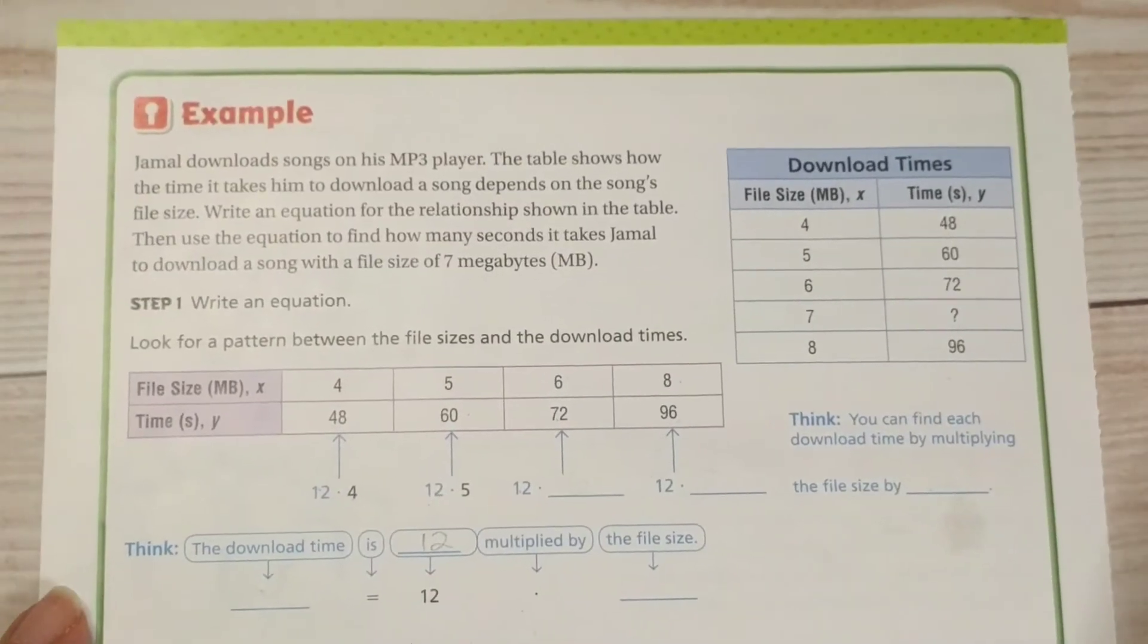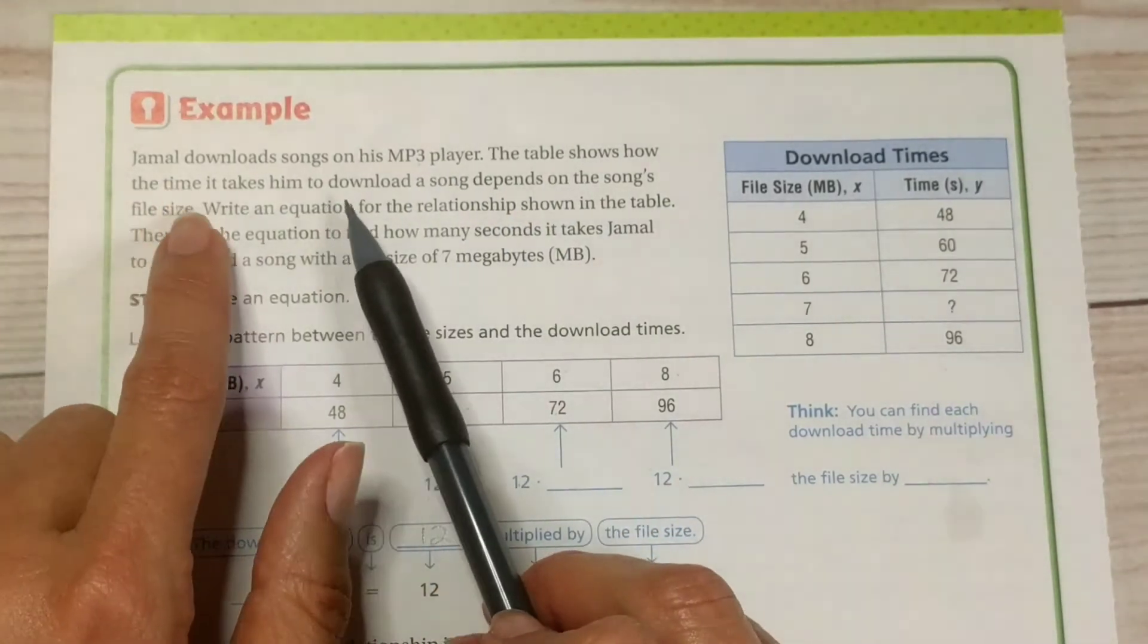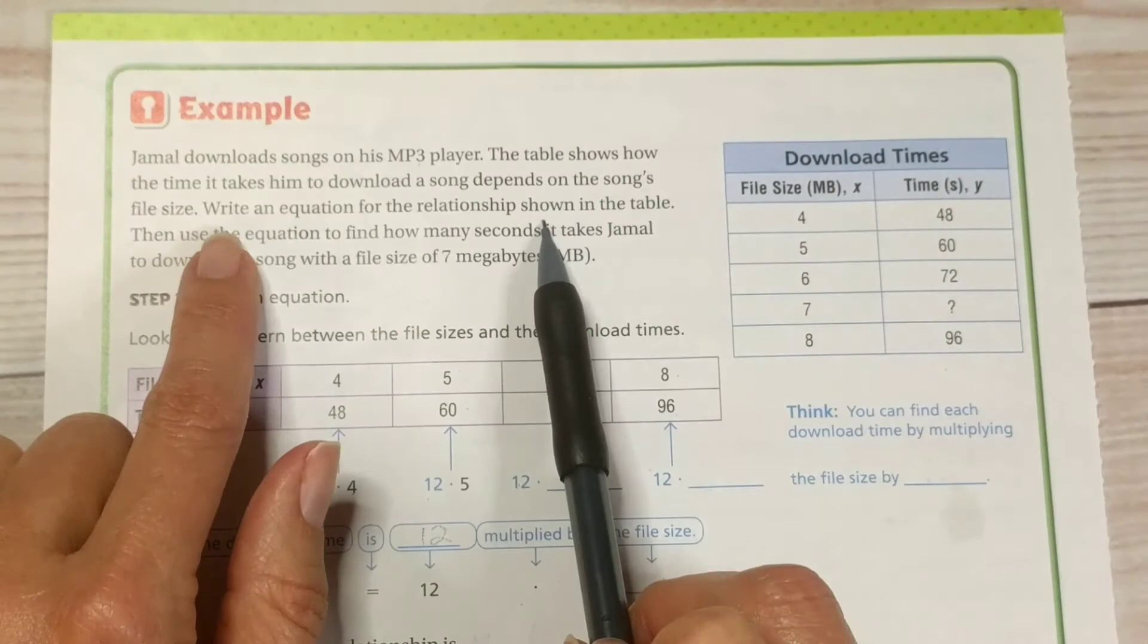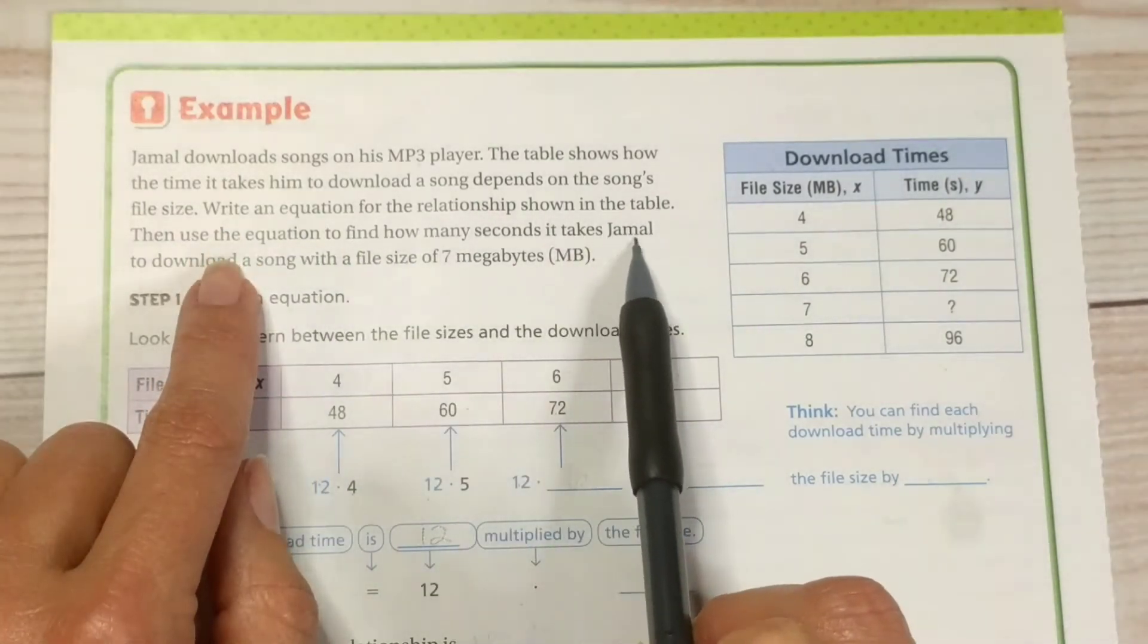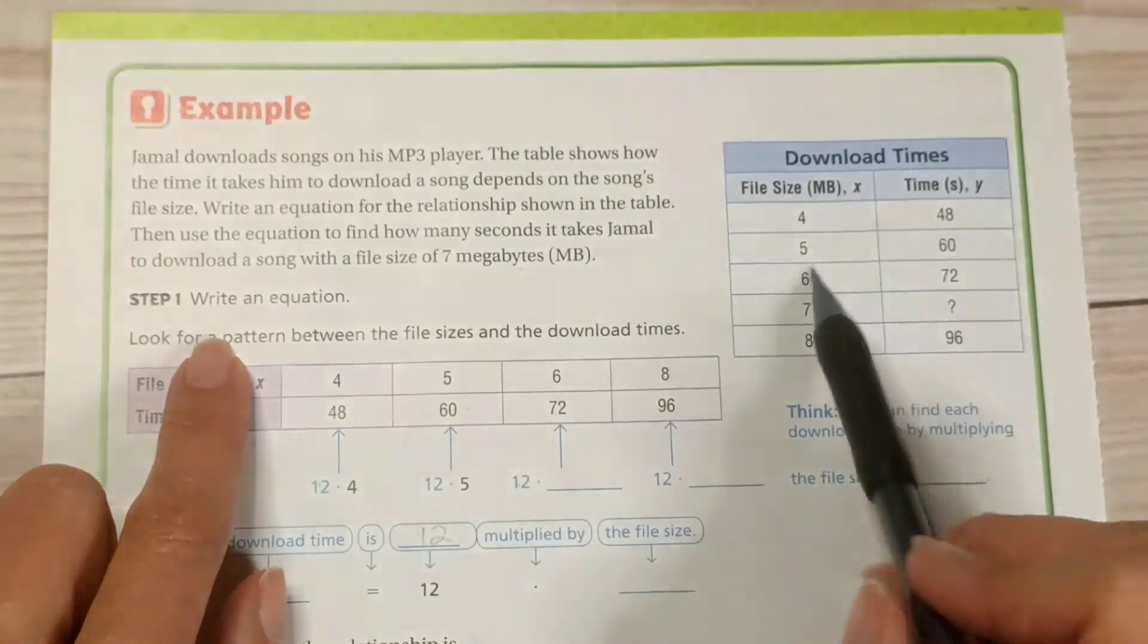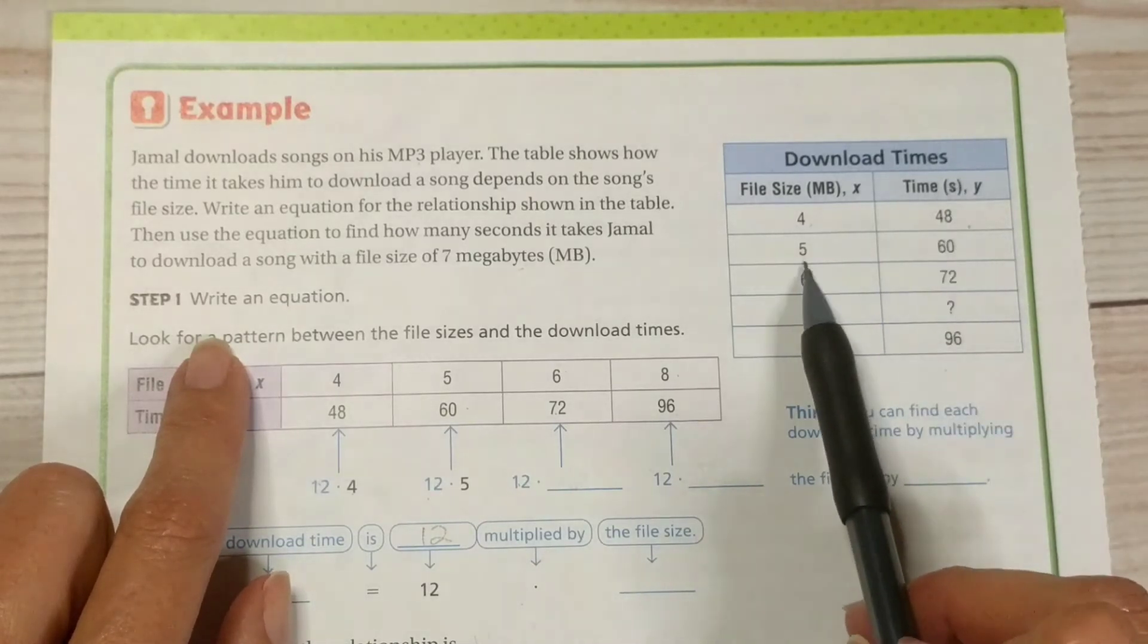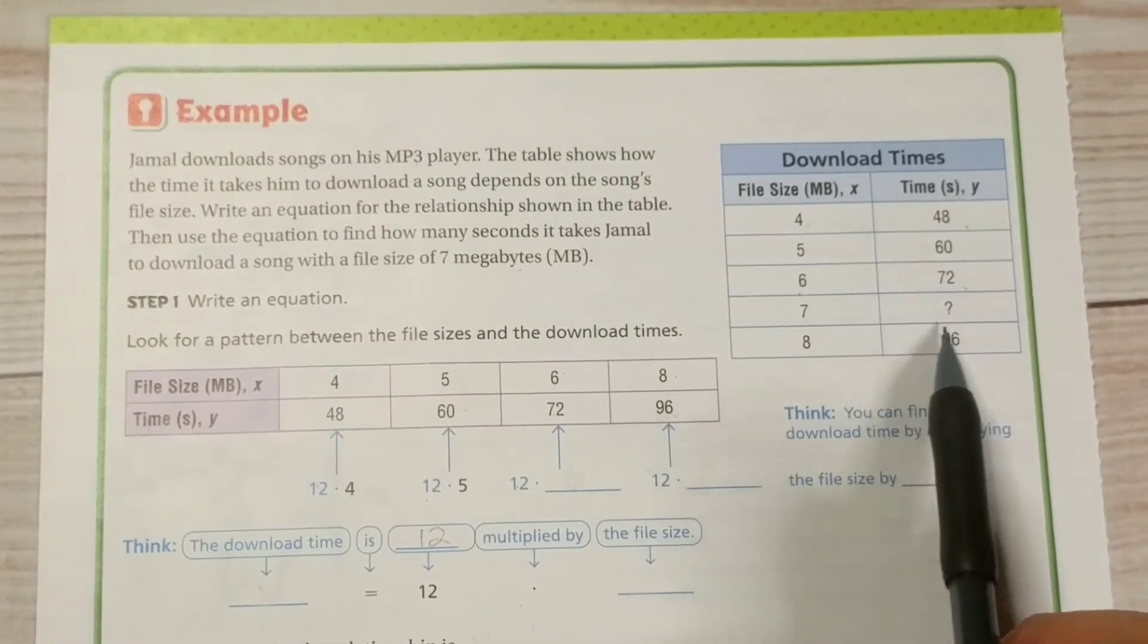Alright, let's take a look at the next page. Jamal downloads songs on his mp3 player. The table shows how the time it takes him to download a song depends on the song's file size. Write an equation for the relationship shown in the table. Then use the equation to find how many seconds it takes Jamal to download a song with a file size of 7 megabytes. So, if it was 4 megabytes, it would take 48 seconds. If it's 5 megabytes, it takes 60 seconds. 6 megabytes, 72 seconds, and so on.